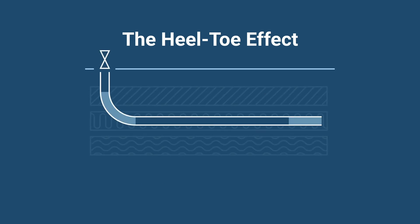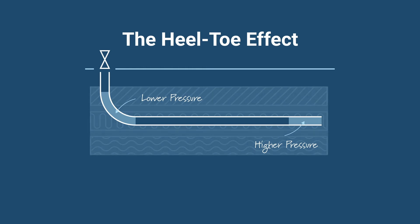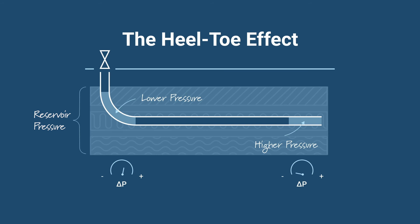But while this pressure difference occurs inside the base pipe, note that the outside pressure of the reservoir remains constant. This results in a higher differential pressure between the reservoir and the inside of the base pipe at the heel compared to that at the toe.